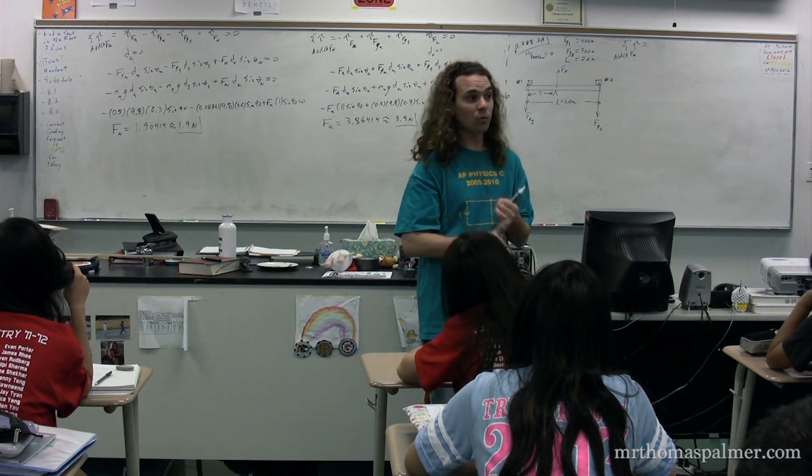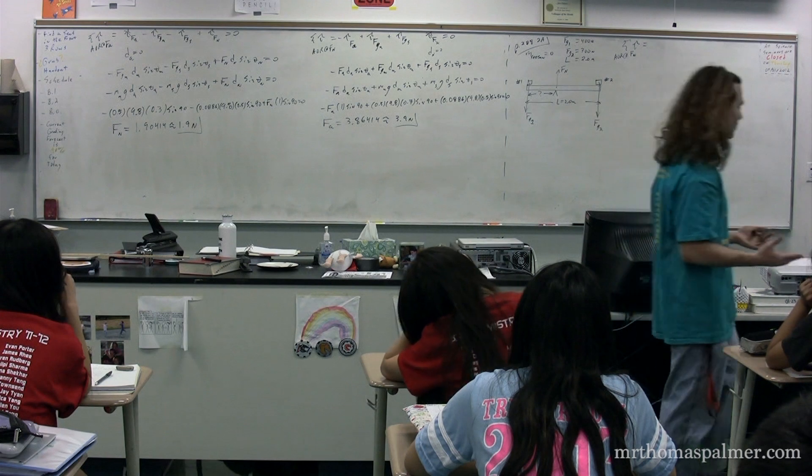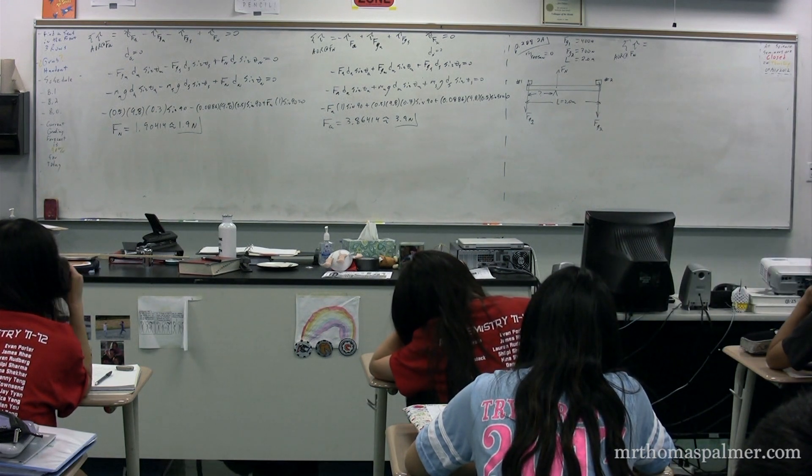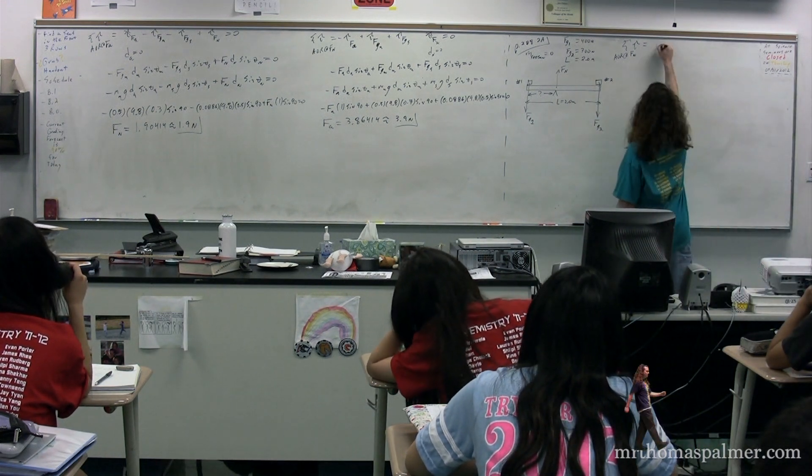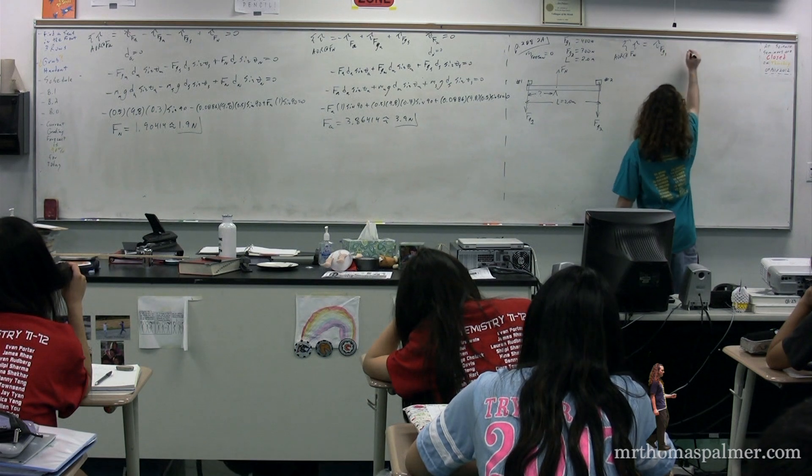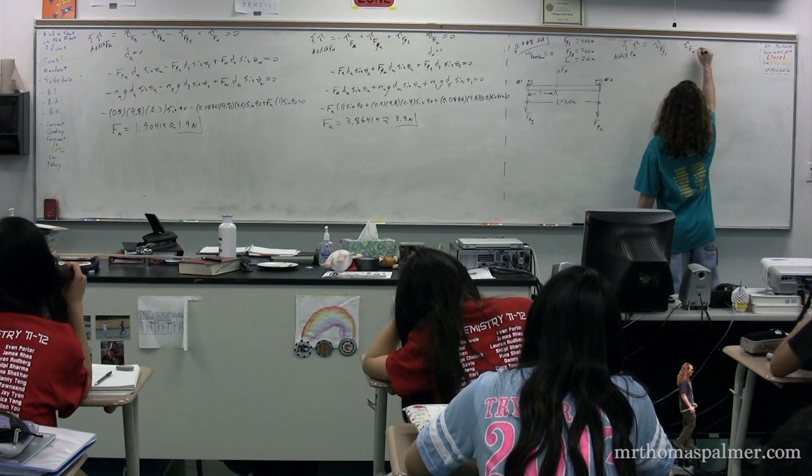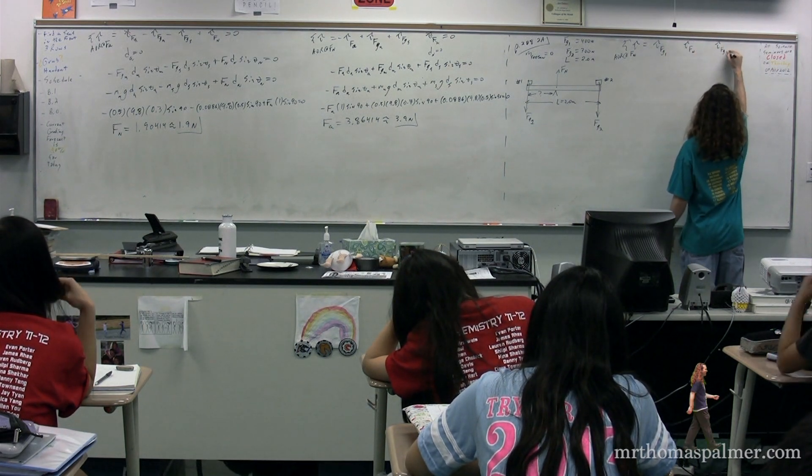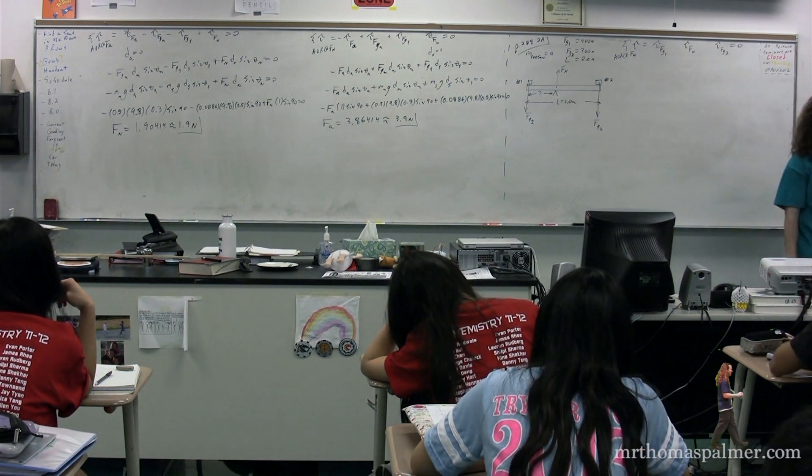Because that force normal, we don't know. So if we can get it out of the equation, it's best for us. So we have, then, the torque due to the force of gravity of child one, torque due to the force normal, and the torque due to the force of gravity of child two. That whole thing adds up to zero.